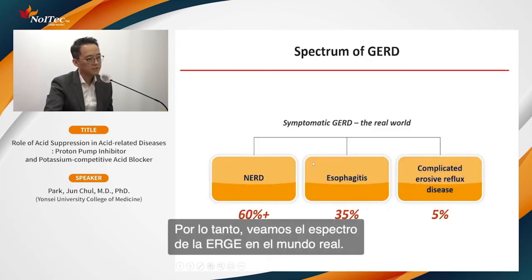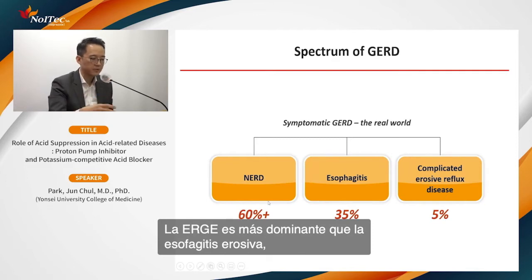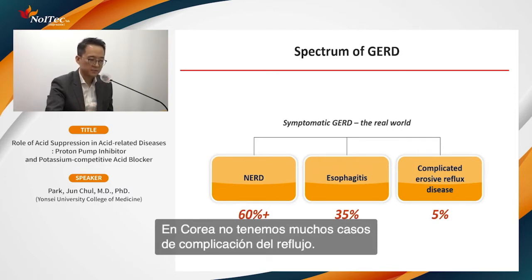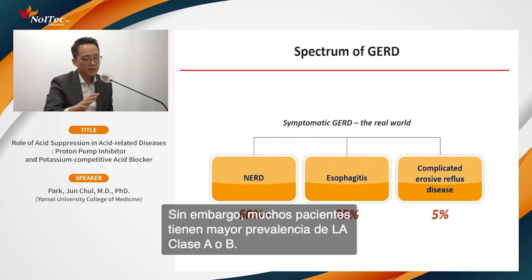In the real-world spectrum of GERD, NERD is more dominant than erosive esophagitis. About 5% represents complicated erosive reflux disease. In Korea, we don't have many complicated reflux cases. Most patients present at a higher prevalence of class A or B erosive esophagitis.